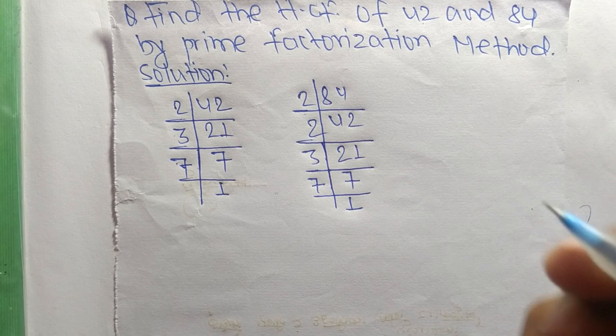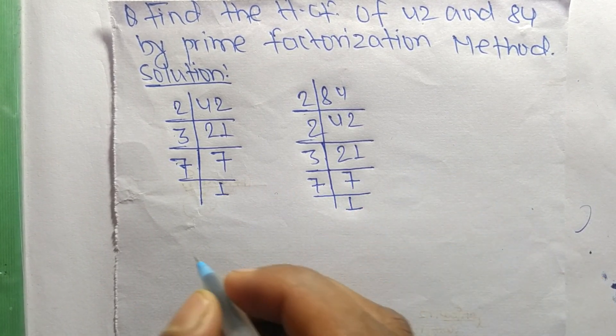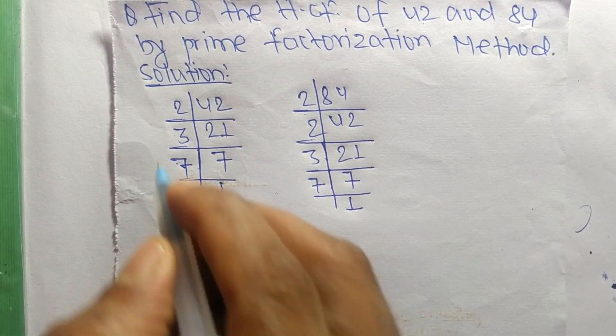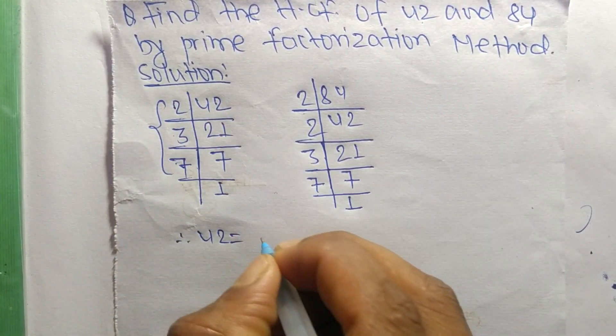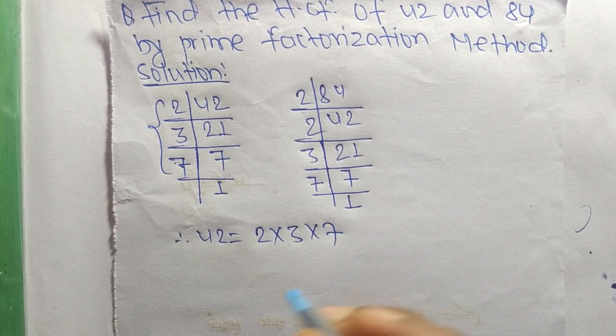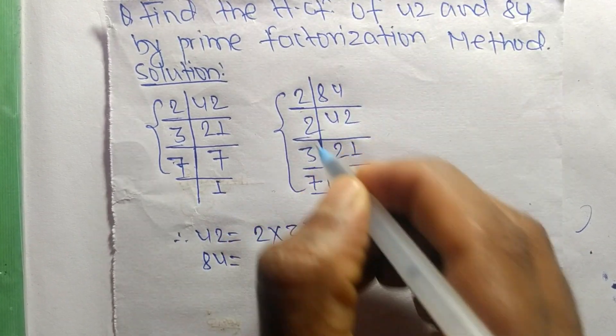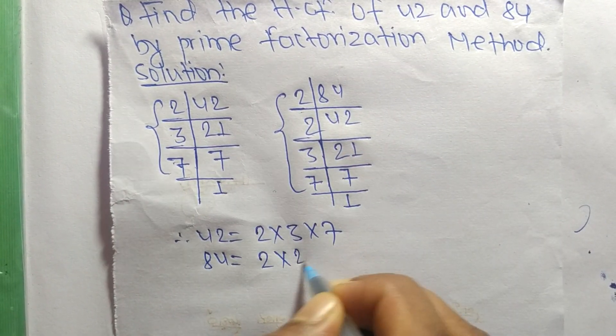So now from these prime factors we can write 42 is equal to 2 times 3 times 7. Likewise, 84 is equal to 2 times 2 times 3 times 7.